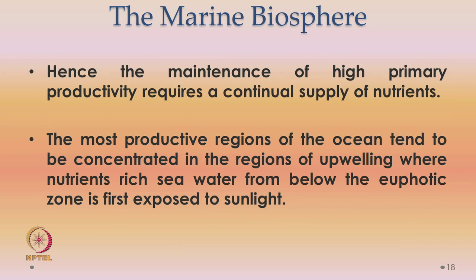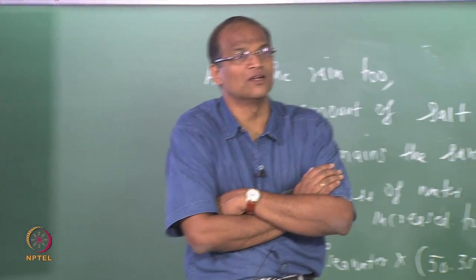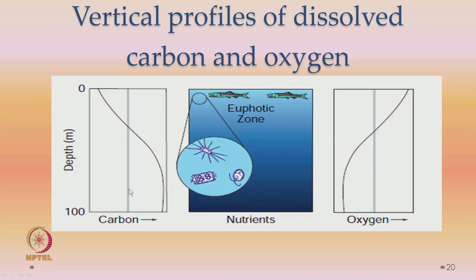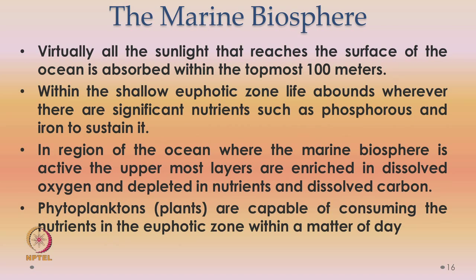Now, what about the marine biosphere? Looking at a graph of depth versus carbon content and oxygen in ocean waters: carbon content is low in the first few meters and increases in deeper layers, because phytoplankton die and sink, accumulating carbon. Oxygen is very high near the surface and decreases with depth, since there is no photosynthesis in deep layers. The first 100 meters is called the euphotic zone.